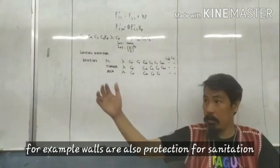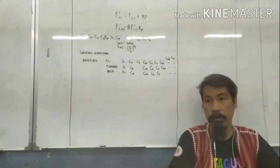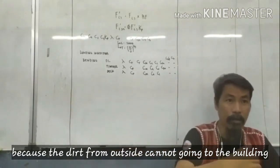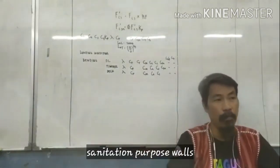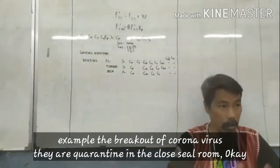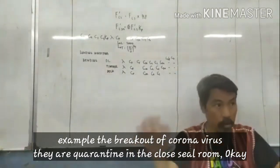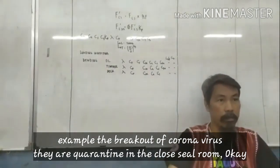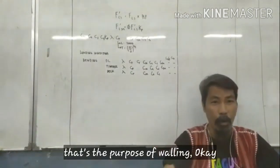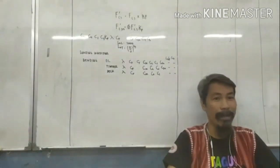So for example, walls are also protection for sanitation because the dirt from outside cannot enter the building. Sanitation purpose, walls. For example, the breakout coronavirus, they are quarantined in a closed room. Okay, that is the purpose of walls. And it is structural.